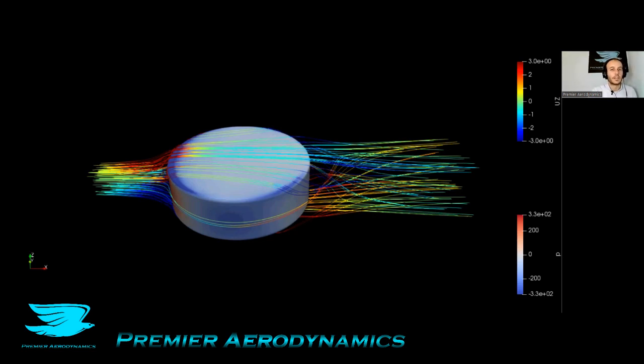So what we have here is a hockey puck and this is running at 25 meters per second. It's a snapshot I guess, and we have some streamlines coming from upstream to downstream. This is a lot more interesting flow than what I thought it would be.